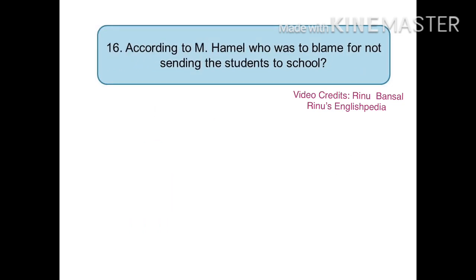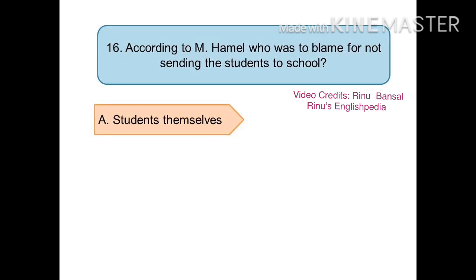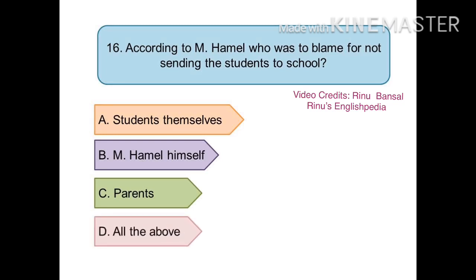The next question is: according to Monsieur Hamel, who was to blame for not sending the students to school? The options are (a) the students themselves, (b) Monsieur Hamel himself, (c) the parents, or (d) all of the above. The right answer is (c) the parents. You need to understand the difference: for the overall state of uneducated people of Alsace and Lorraine, everyone was responsible, but specifically for not sending children to school, it were the parents who preferred that children work at mills and factories.